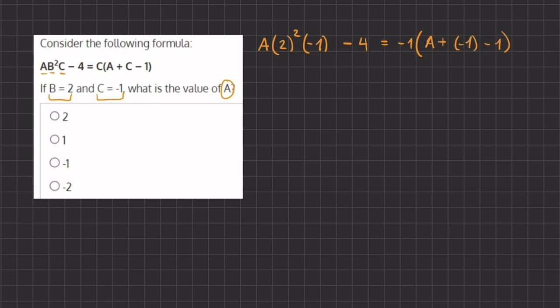Alright, so now let's start and simplify. Here we have 2 raised to 2, 2 squared, and that gives us 4 times negative 1. That means that we have a negative 4A minus 4.